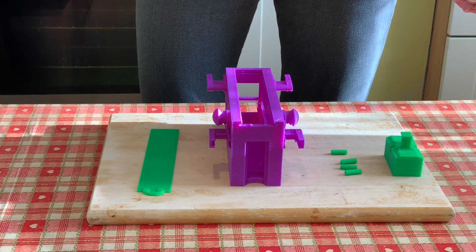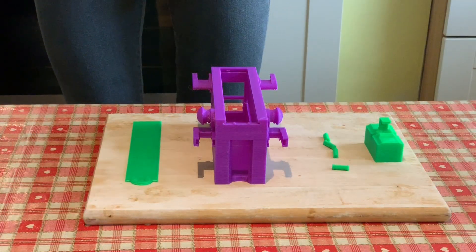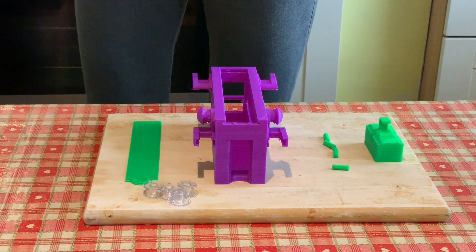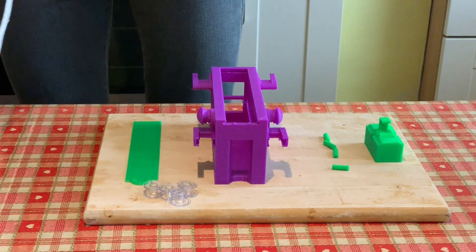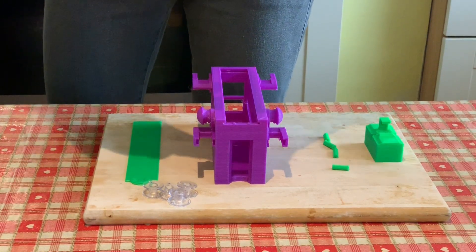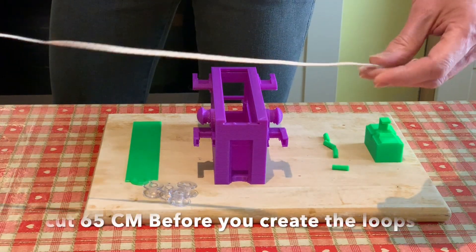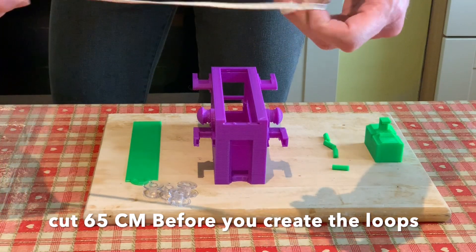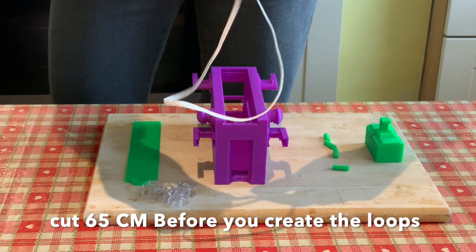You'll also need four bobbins suitable for a Brother sewing machine and also a 65 centimeter piece of elastic with these loops on the end. I've chosen to sew the loop. Some people tie them, but I think it looks quite a lot better if it's simply sewn.